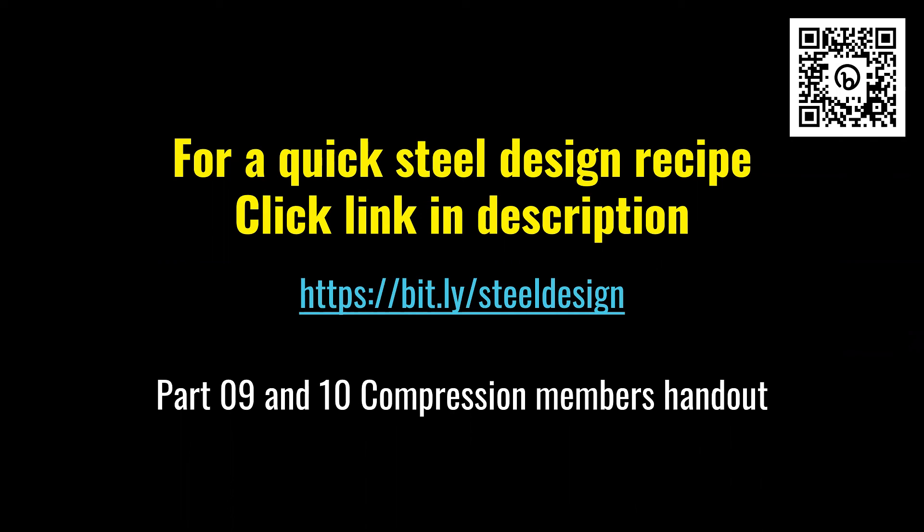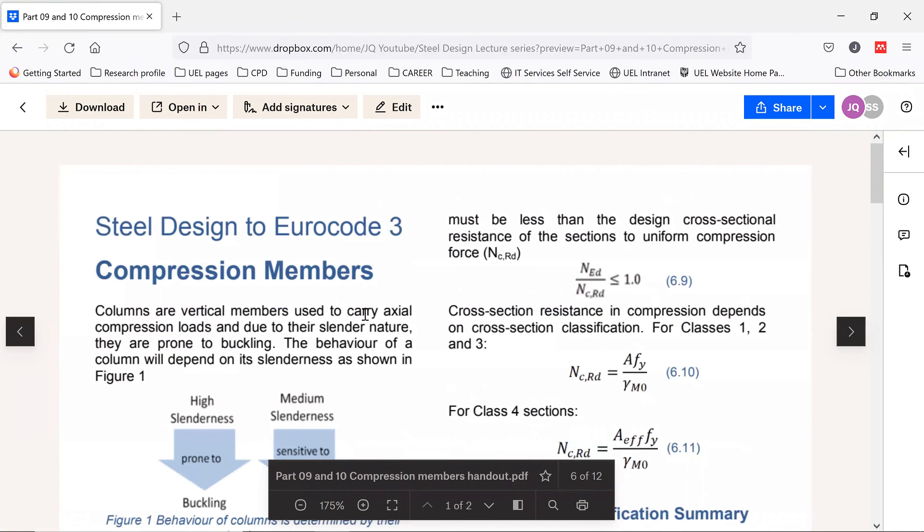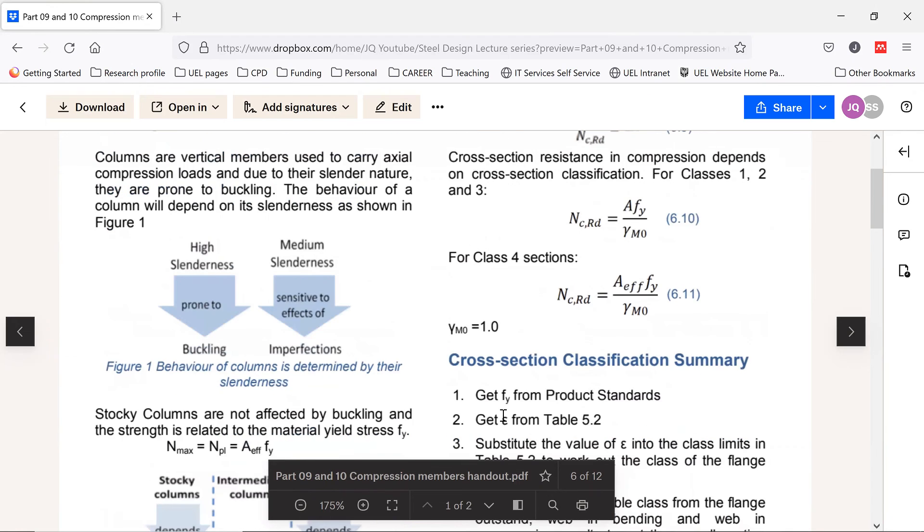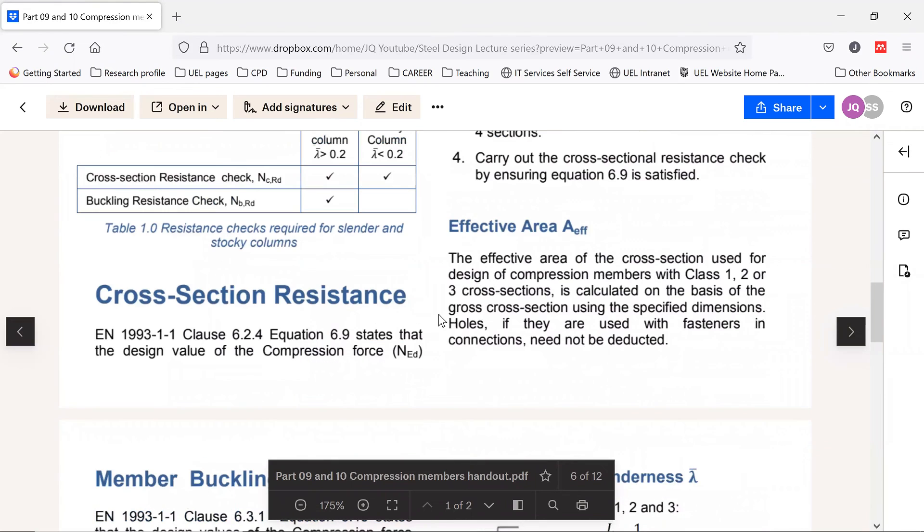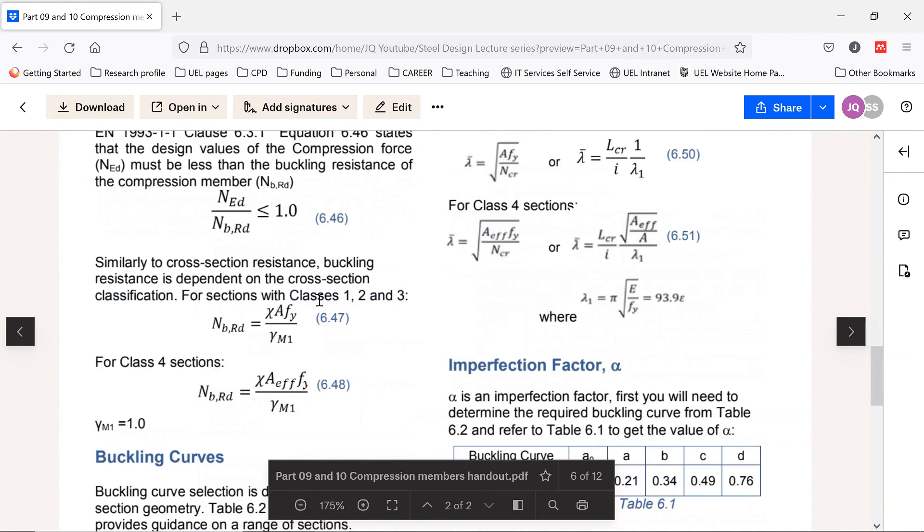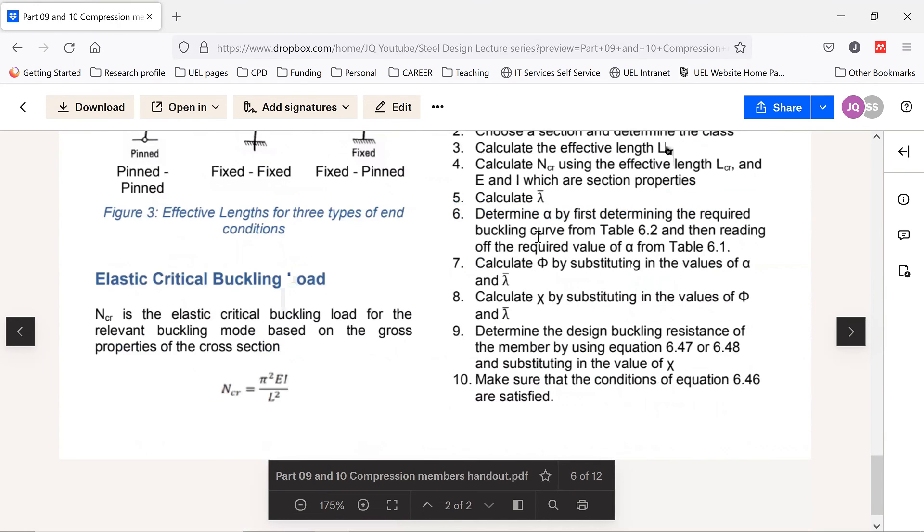You might be wondering, how do I remember all these difficult formulas? There's a quick solution. If you click on this bit, ly slash steel design, it will take you to a quick recipe for design of compression members. It's a Dropbox folder, no sign-in required. If you click on that, you'll be able to see this two-page recipe, a design recipe where you have all the formulas used in this lecture, starting from compression resistance to buckling resistance, all the way to slenderness formula, imperfection, buckling length, and all the design steps.